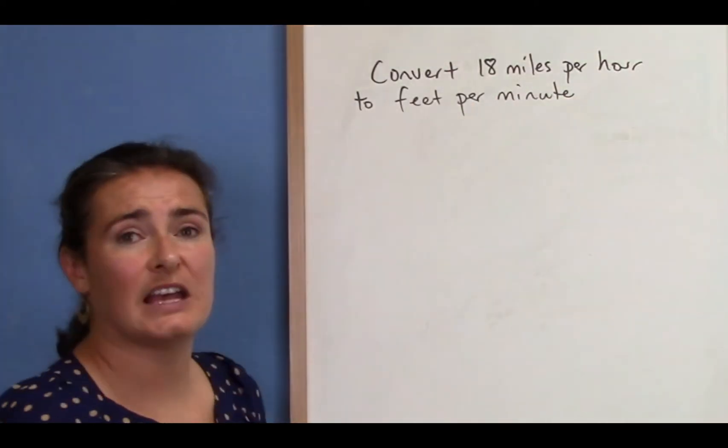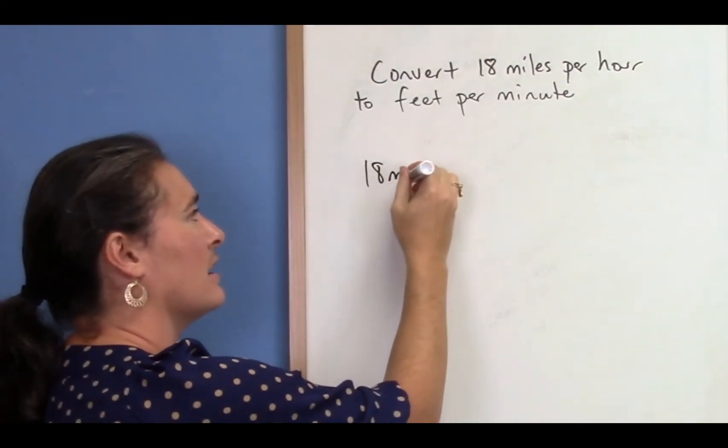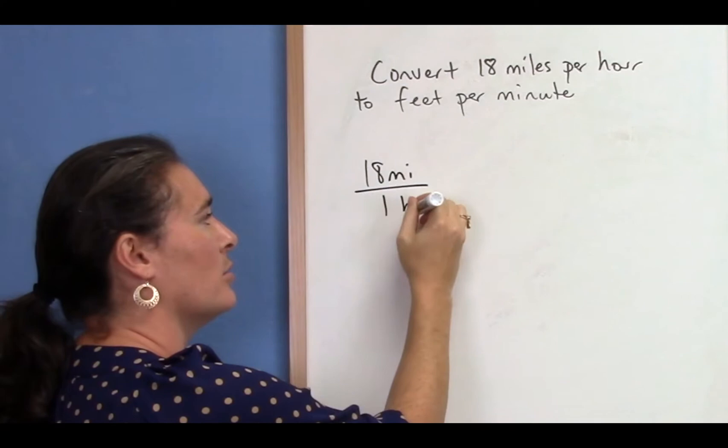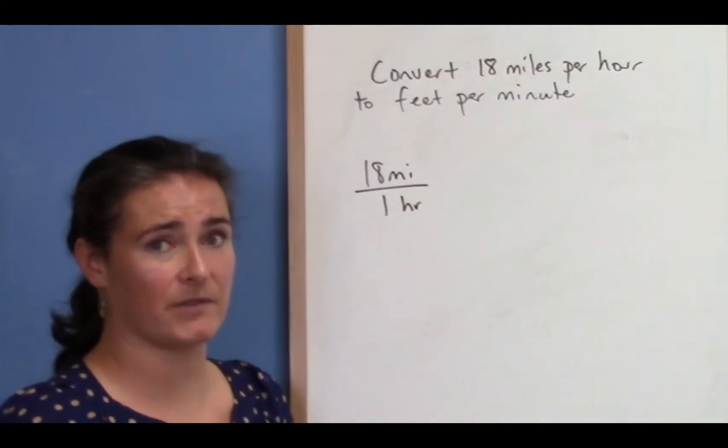Miles per hour tells me the units on my original 18, 18 miles per hour. So I'm going to put one hour in the denominator, but I don't want miles or hours. Those both need to be converted.